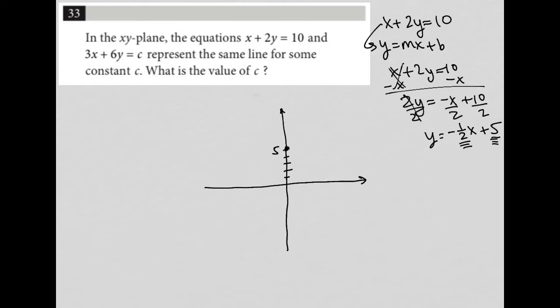And then down 1, I'll use a different color, down 1, and to the right twice, which would mean I have a 1 and a 2 here. That'd be my next point. So my line will look something like this. So that's the first equation.